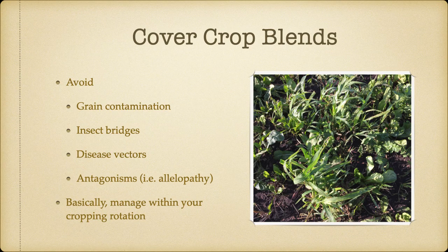Disease vectors. Looking at the canola complex for diseases — when we have a tight canola rotation, we want to avoid brassicas in our cover crop mixes. Between club root, rhizoctonia, pythium, and all these other diseases, we want to watch those. When we're going into a cool season legume crop — peas, lentils, fabas — we want to minimize those legumes we're growing the year before in a cover crop, because diseases will come and get you.